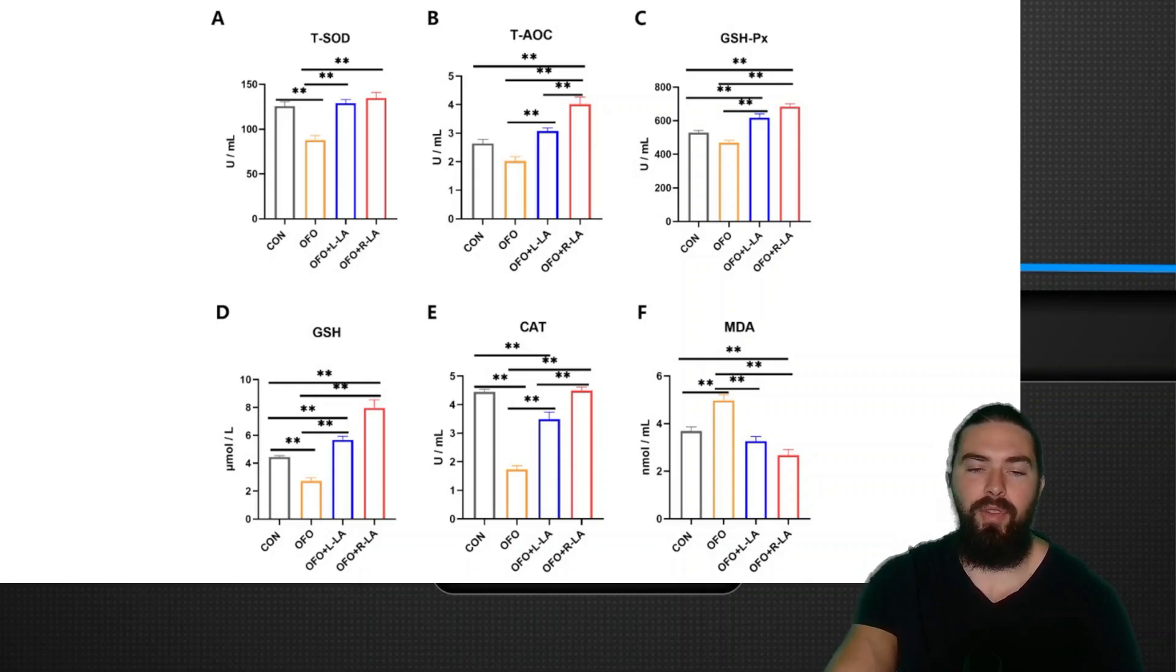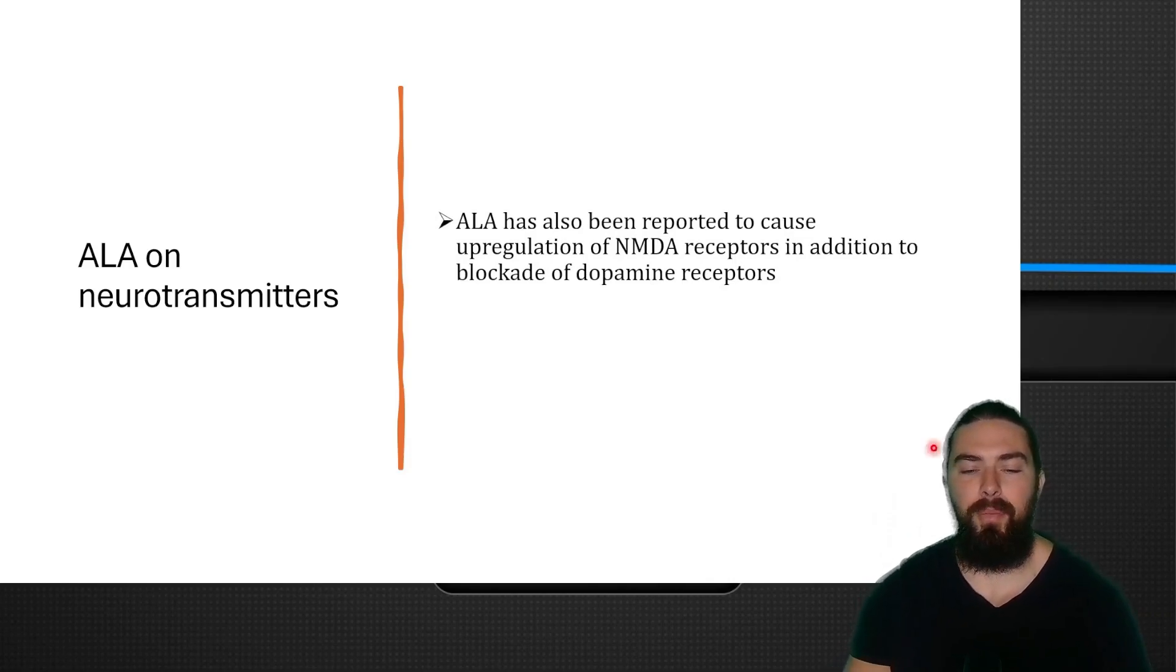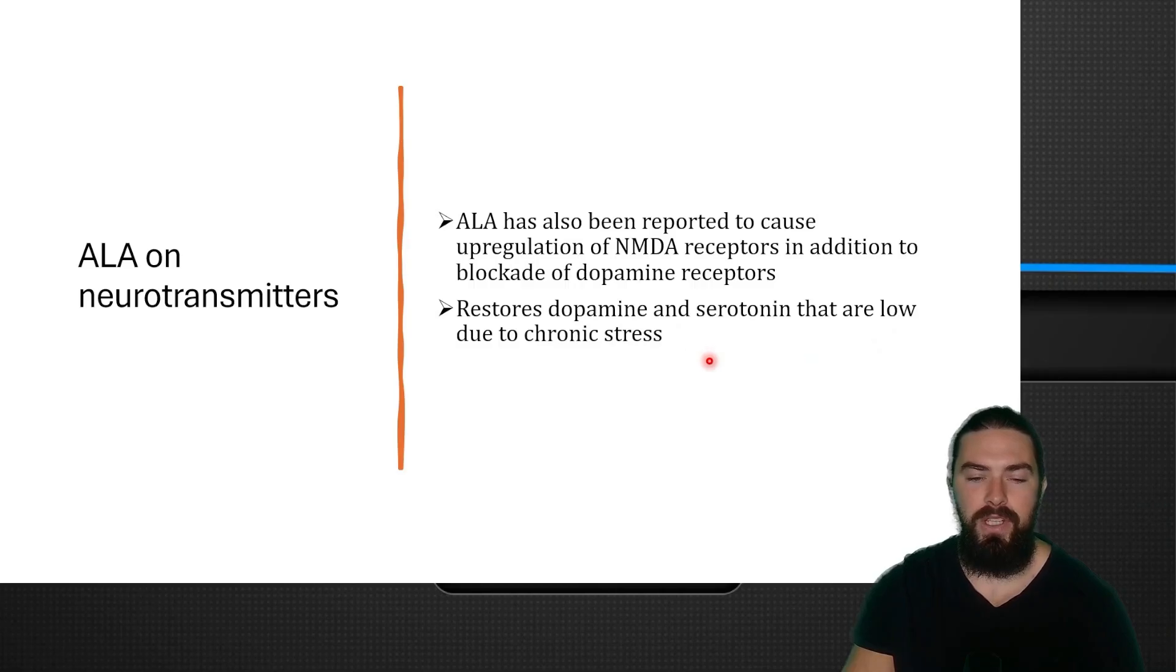Alpha lipoic acid on neurotransmitters: alpha lipoic acid has been reported to cause upregulation of the NMDA receptor in addition to blockage of the dopamine receptor. It strengthens antipsychotic medication and restores dopamine and serotonin that are low due to chronic stress. This upregulation of the NMDA receptor can actually be really helpful for motivation and focus, but also libido, which is interesting to me because in the previous study it showed that it didn't help with libido. But I saw a couple of anecdotes on Reddit where people say it was really helpful for increasing libido. Maybe in cases where people do not have high levels of NMDA receptor expression, alpha lipoic acid can be good to enhance libido for these individuals. Maybe a good starting dose would be 600 milligrams twice a day.